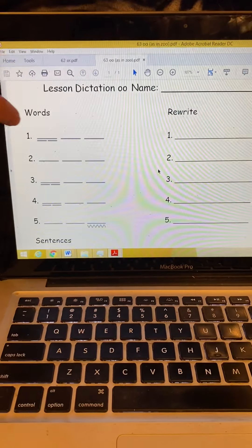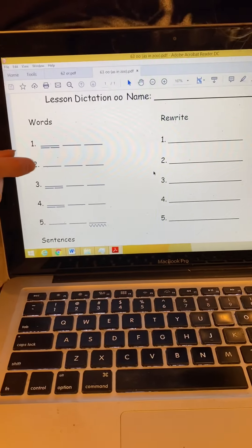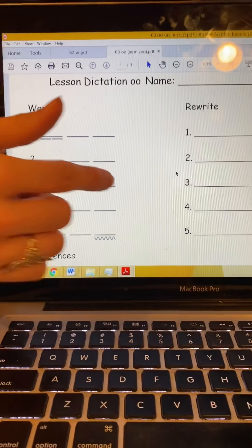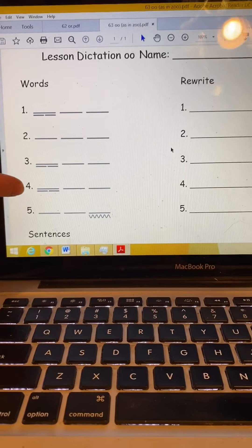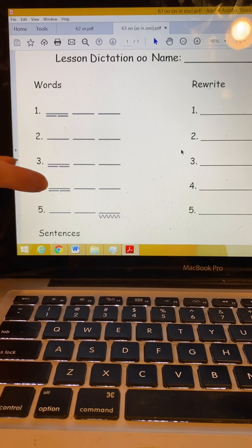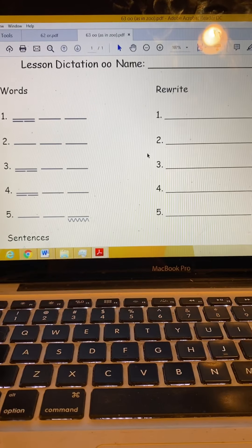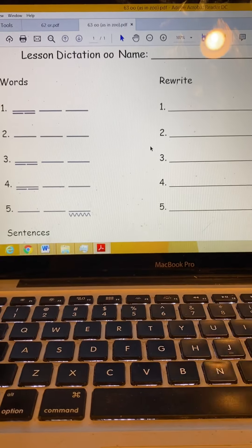You'll see number one has three lines and two underlines under the first. Number two has three lines. Number three has three lines and two lines under the first. Number four has three lines and two lines under the first. Number five has three lines and a squiggly line under the third line. Let's get started.